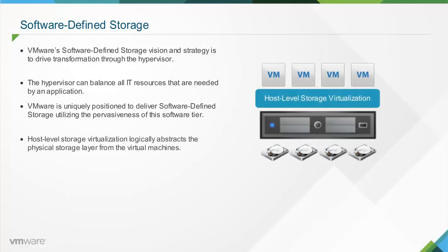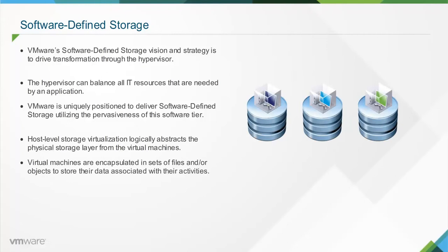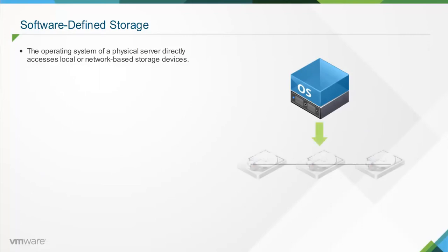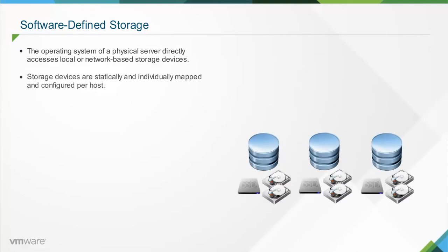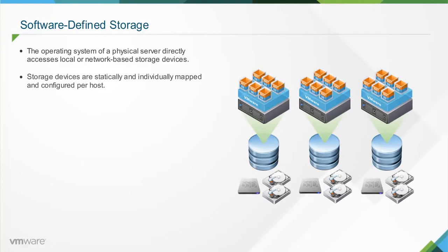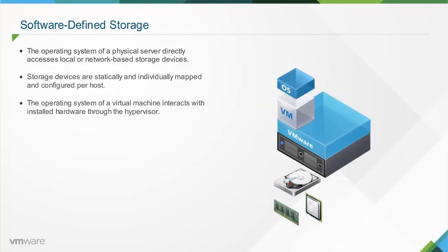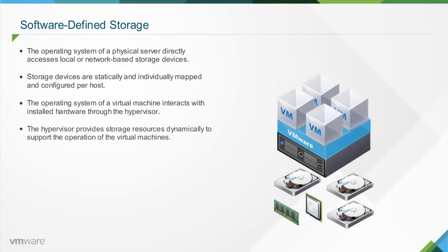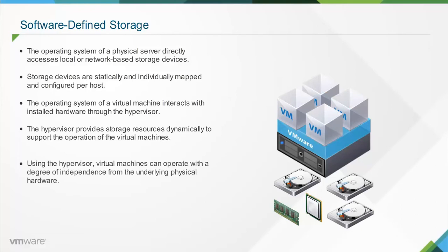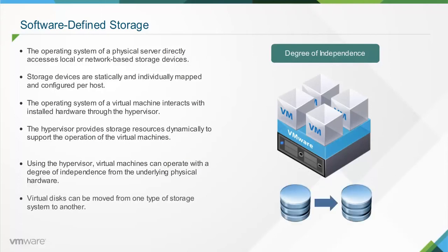VMware provides host-level storage virtualization, which logically abstracts the physical storage layer from virtual machines. Virtual machines are encapsulated in sets of files or objects to store their operating system, program files, and other associated data. The operating system of a physical server directly accesses local or network-based storage devices that are statically and individually mapped and configured per host. In contrast, the operating system of a virtual machine interacts with hardware through the hypervisor, which provides storage resources dynamically to virtual machines as needed. Using the hypervisor, virtual machines can operate with independence from the underlying physical hardware — for example, virtual disks can be moved from one type of storage system to another without affecting the functioning of the virtual machine.